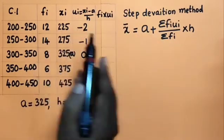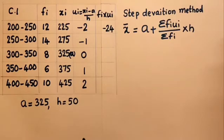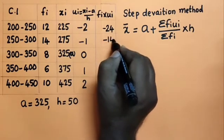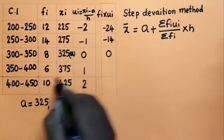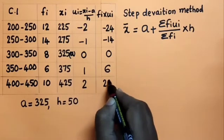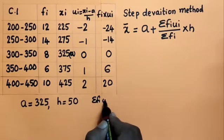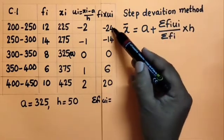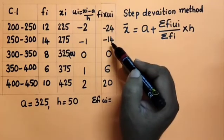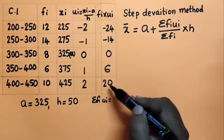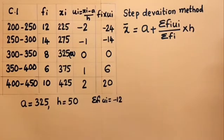Now computing fi × ui for each class: 12 × (−2) = −24; 14 × (−1) = −14; 8 × 0 = 0; 6 × 1 = 6; 10 × 2 = 20. Summing these: Σfiui = −24 + (−14) + 0 + 6 + 20 = −12. Also, Σfi = 50 (total workers).